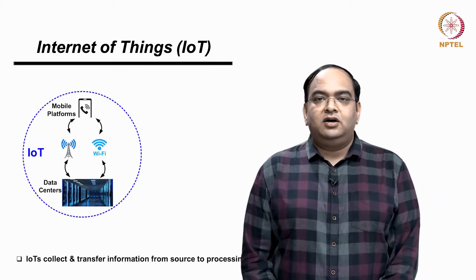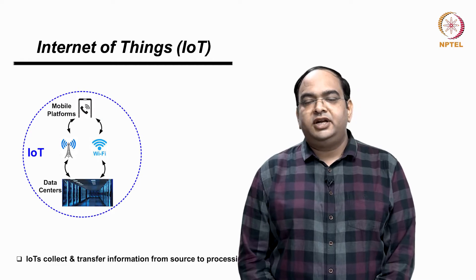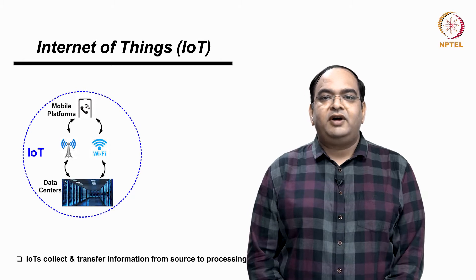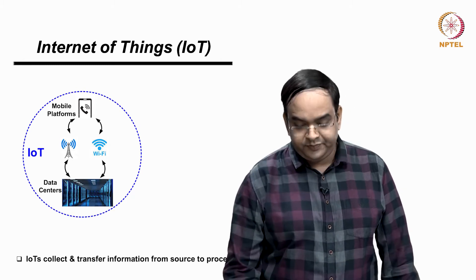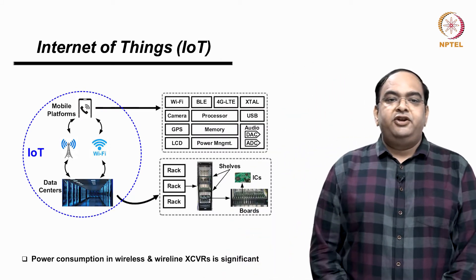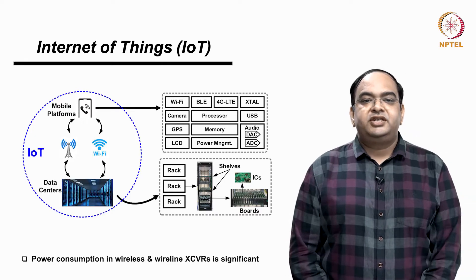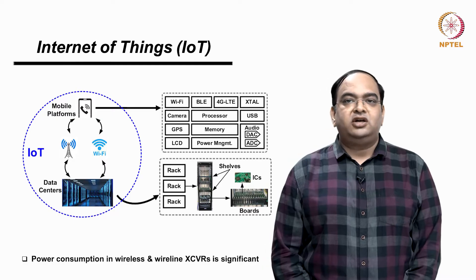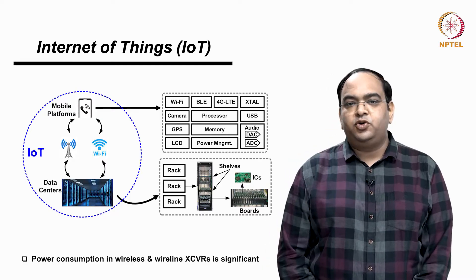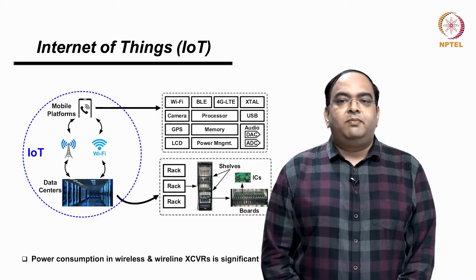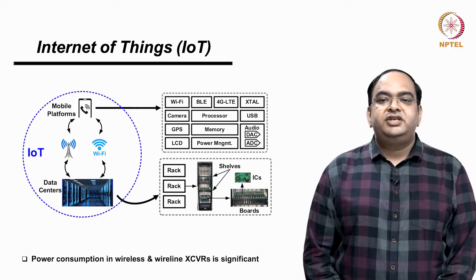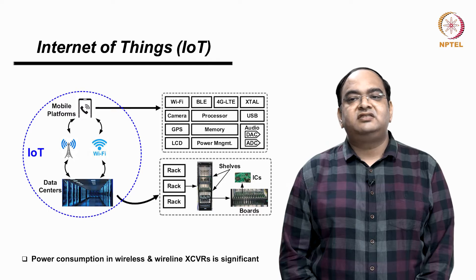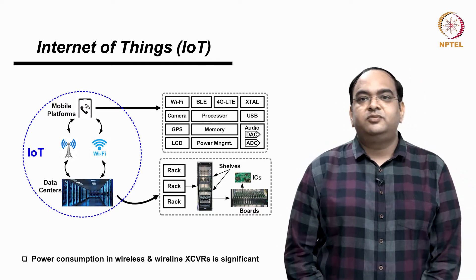We will look at what are the things which we are going to cover in this course at a broad level and where this course will find its use in industry. In today's world, a lot of digital information is generated by the Internet of Things. This information is processed, transferred and stored at different locations. The platforms that cater to this information vary from portable devices like mobile phones to static facilities like data centers and supercomputers.